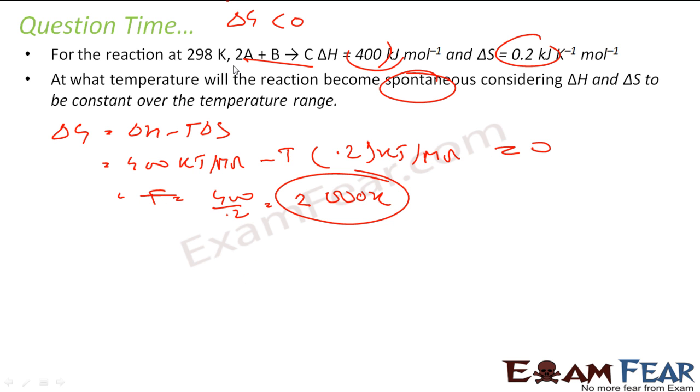Now for this reaction to be spontaneous, G has to be less than zero. For G to be less than zero, if you see, if my temperature is greater than 2000 Kelvin, then only G will be less than zero.